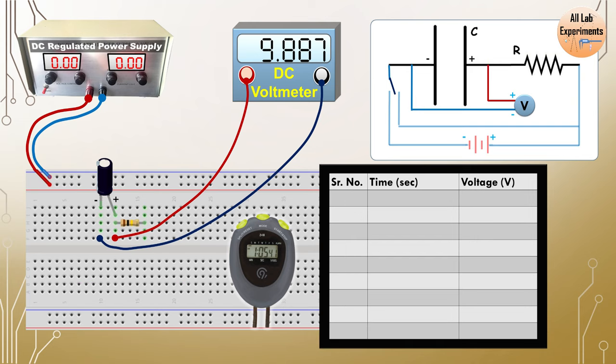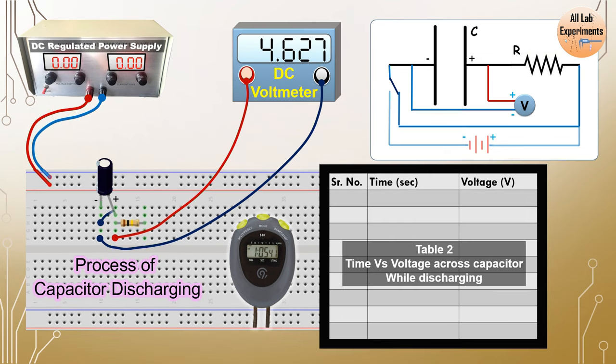To discharge this capacitor first we disconnect the battery, so we removed these positive and negative wires. Now we will connect the negative of our capacitor with the other part of the resistor. The negative charges from one part of the capacitor are moving to the other plate.